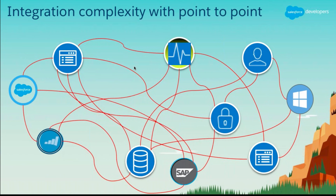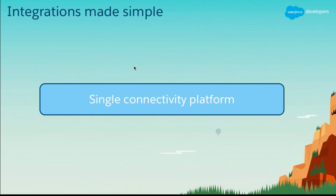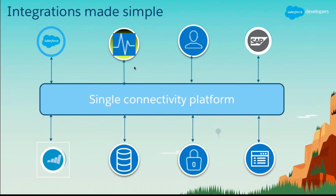We can create a single connectivity platform where all these applications get connected. Looking at the diagram, you can compare this with the earlier spaghetti integration diagram — this looks pretty straightforward, almost point-to-point. Instead of each system connecting directly to other systems, everything connects to a single connectivity platform.